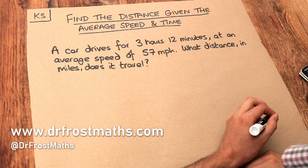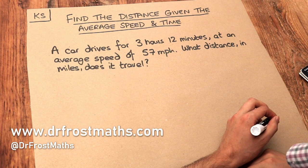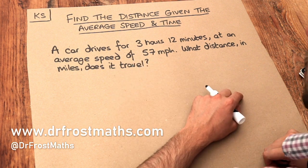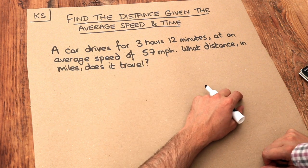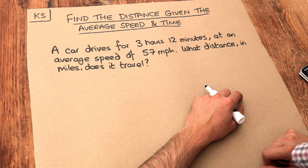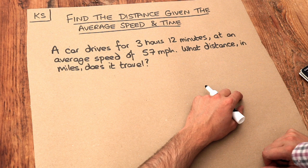Hello and welcome to this Dr Rostmann's key skill video on finding the distance given the average speed and time. We have this problem here. A car drives for 3 hours 12 minutes at an average speed of 57 miles per hour. What distance in miles does it travel?